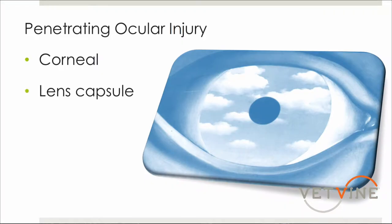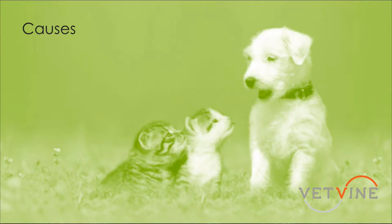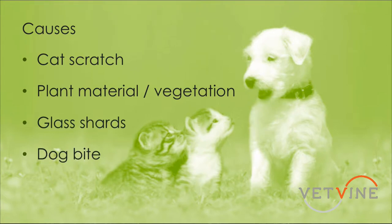Penetrating ocular injuries can occur due to a penetrating wound through the cornea, which may or may not involve the lens capsule. Causes for these injuries can include cat scratches to the eye, laceration or penetration of plant material or vegetation for pets running through the brush, penetration of glass shards, or even dog bite wounds to the eye.